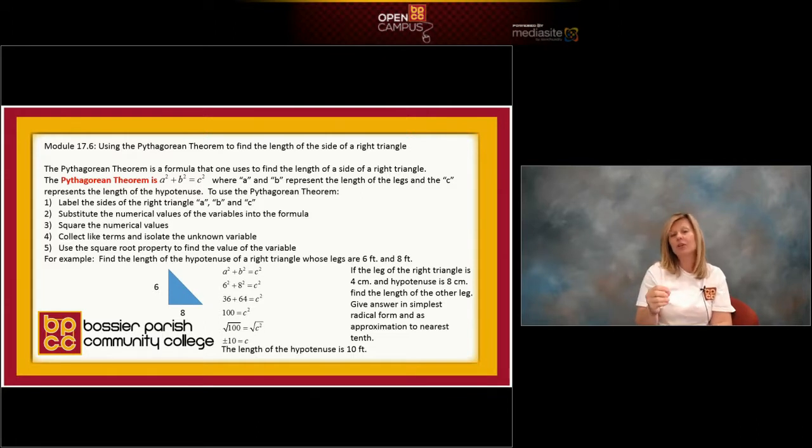The important thing is when you write Pythagorean theorem as a squared plus b squared equals c squared, it matters where you place the numbers. Little a and little b represent legs. Little c represents hypotenuse.